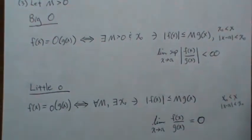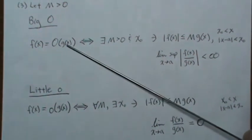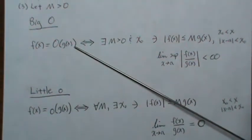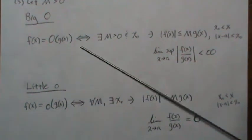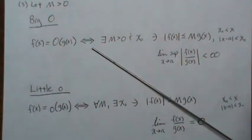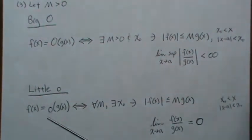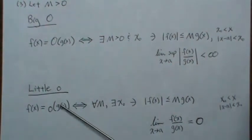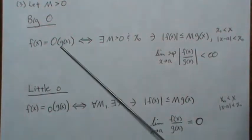Let me give a heuristic argument for what both of these mean. Big O means that these two functions, f(x) and g(x), behave similarly as x approaches the limit — either infinity or some value a. And little o means that f(x) gets dominated by g(x), that g(x) grows so big compared to f(x) that the ratio goes to zero.